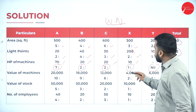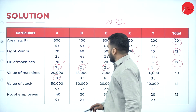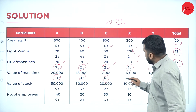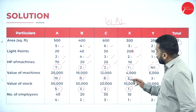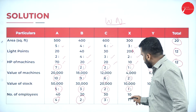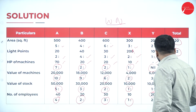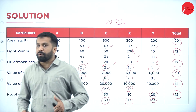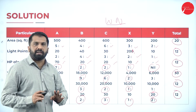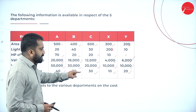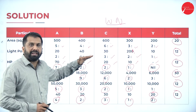For value of machine: 20,000; 18,000; 12,000; 4,000 — simplify by dividing by 2,000 to get 10, 9, 6, 2, 3. Then value of stock: 5, 3, 2, 1 — simplify accordingly. Number of employees: 4, 2, 3, 1 — total is 10. These simplifications are called working notes. We have not yet started the answer; we only simplified the numbers given in the question.